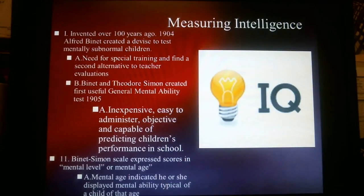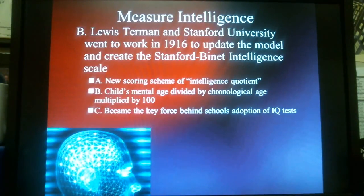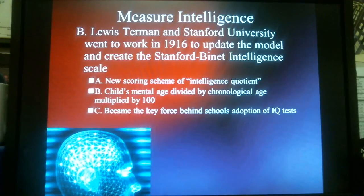The problem with the original scale was it wasn't very well administered and didn't have a lot of scientific backing. So in 1916, Lewis Terman — a name you want to make sure you get down — at the University of Stanford came up with a new scale. He and his team created what was known as the Stanford-Binet Intelligence Scale. Basically the same test Binet came up with, but with a different scale.